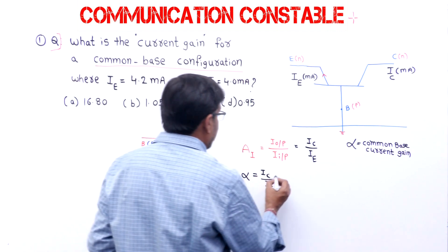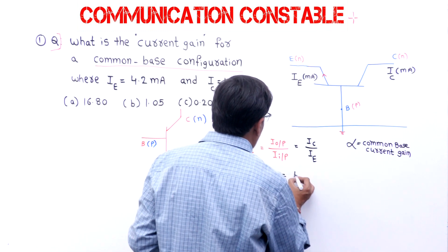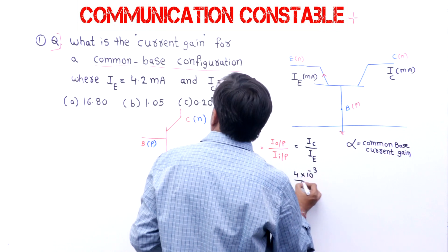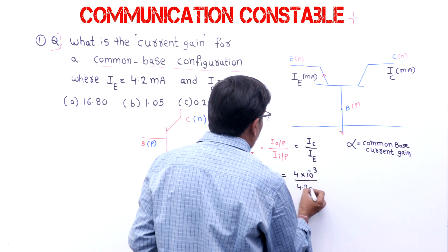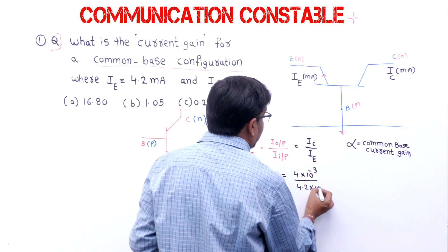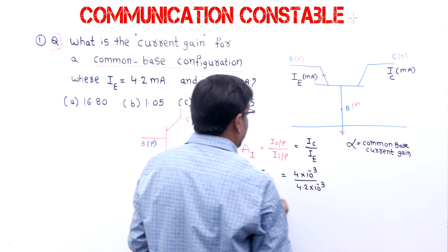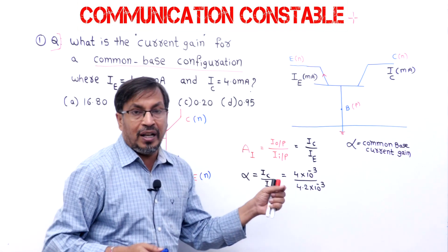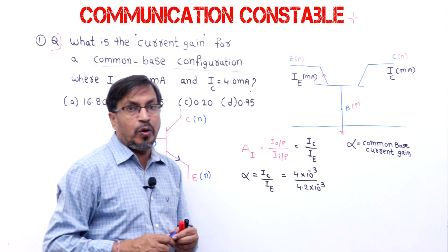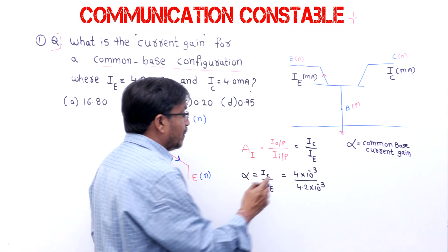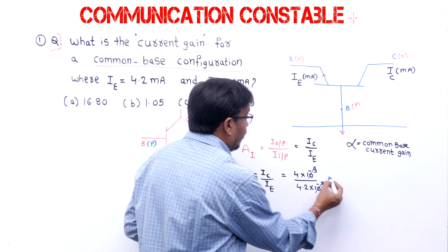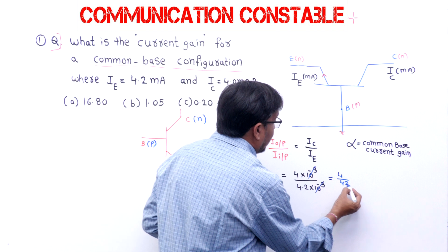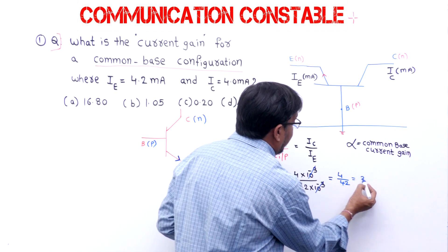IC is 4 milliamperes (4 × 10⁻³) and IE is 4.2 milliamperes. So alpha equals IC by IE = 4 by 4.2. Cancelling milli with milli, we get 4 by 4.2, which simplifies to 2 by 2.1, or 20 by 21.